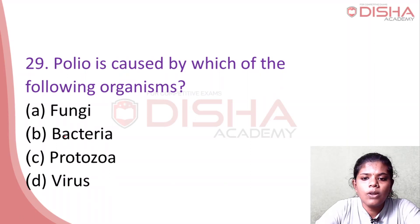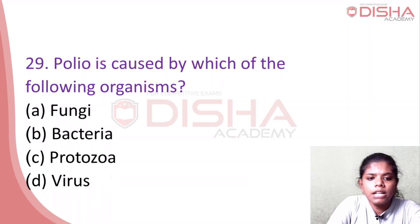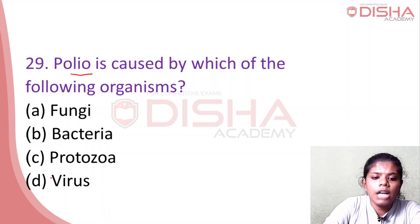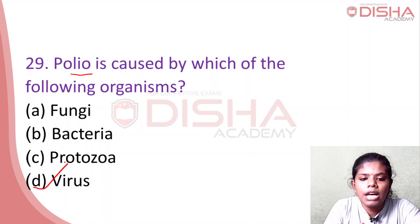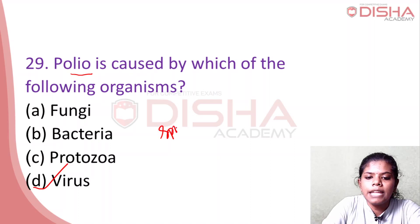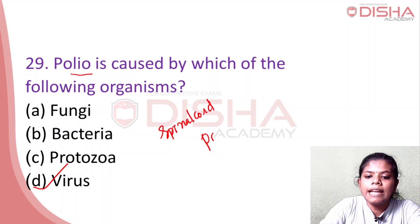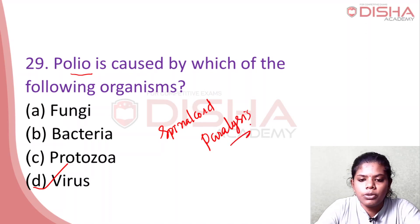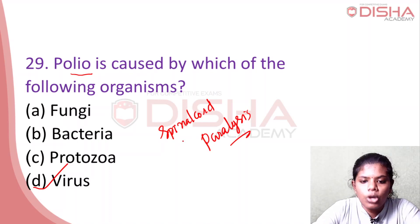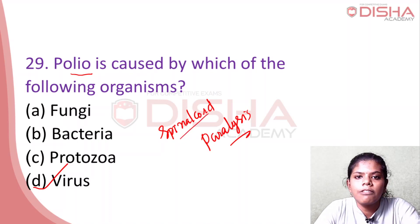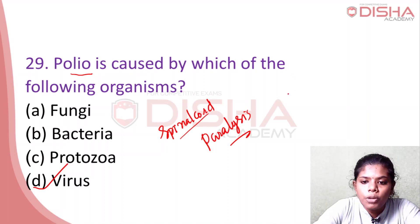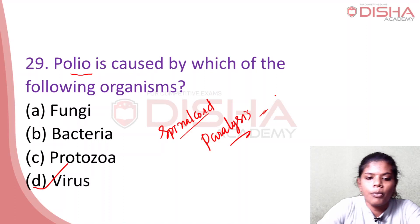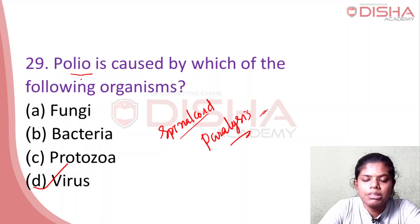Polio is caused by which organism? Polio is caused by a virus. It affects the spinal cord and nervous system, leading to a paralysis condition.